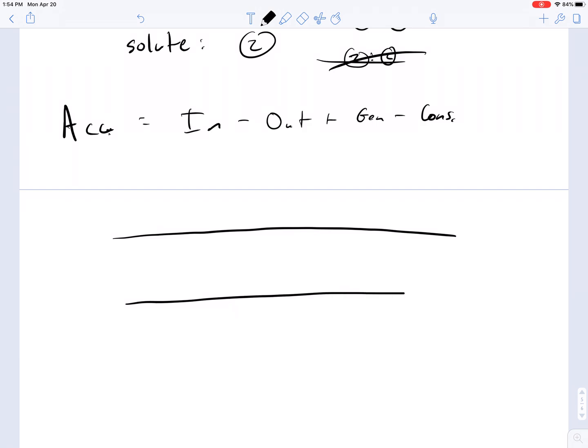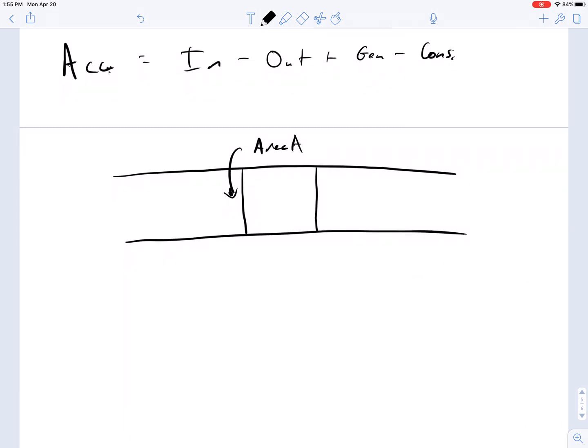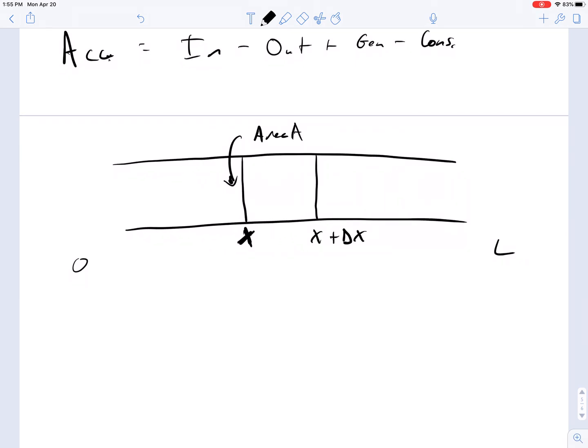So consider the material that has a cross-sectional view like this. This could be a fluid or a solid, and then it has a cross-sectional area A, and then this goes from zero to some length L. This is position X right here, and this is some position X plus delta X right here for a small interval away from position X.